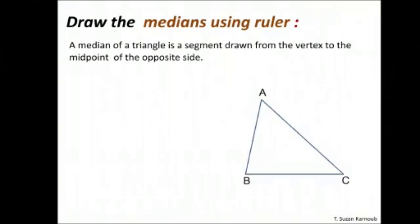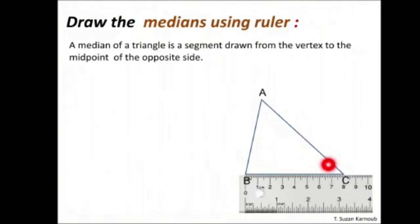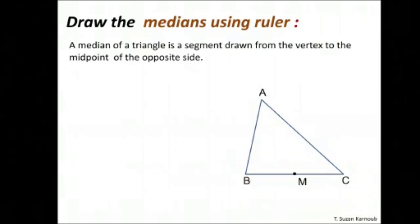In triangle ABC, I'm going to draw the median from A to BC. I'm going to use the ruler to find the midpoint. Here the length of BC is 8, so it's easy to find the midpoint. After I find the midpoint, I'll connect it with vertex A. This represents the median from A to BC.